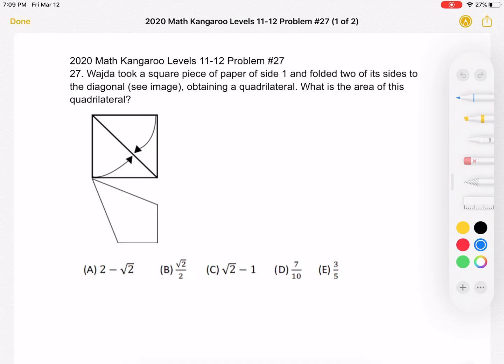A, 2 minus square root of 2. B, square root of 2 over 2. C, square root of 2 minus 1. D, 7 tenths. Or E, 3 fifths.